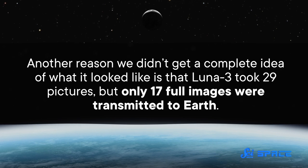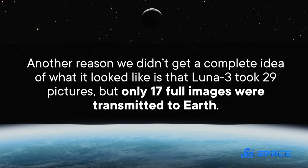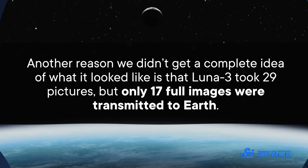Another reason we didn't get a complete idea of what it looked like is that Luna 3 took 29 pictures, but only 17 full images were transmitted to Earth. A cathode ray isn't perfect. It's not super detailed in bright environments, and can only use a limited number of gray shades to make an image. It's pretty impressive that we got any images at all.